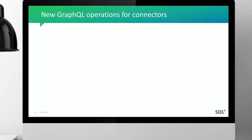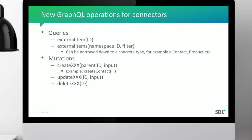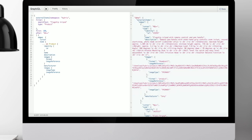There are a few new operations. For queries, you can query for either one external item or several external items using a filter. You can also do mutations — the name for write operations in GraphQL terminology — for example, create a contact or update a Salesforce account. You can also get a list of available namespaces that have been registered, such as external namespaces like Hybris, YouTube, Salesforce, etc., that you can access through GraphQL.